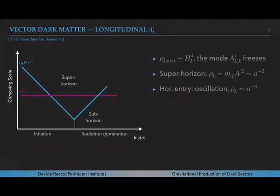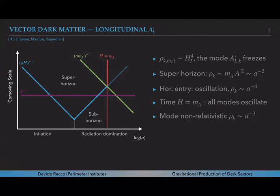When the mode crosses the horizon the mode starts to oscillate and it behaves as a relativistic degree of freedom, the energy density goes as a to the minus four. At the time when the Hubble rate H is equal to m_A, the mass of the vector, all the modes start to oscillate even the ones that are still beyond the horizon and those modes will go as a to the minus three. Also the sub-horizon modes when they cross the Compton wavelength will scale as a to the minus three.